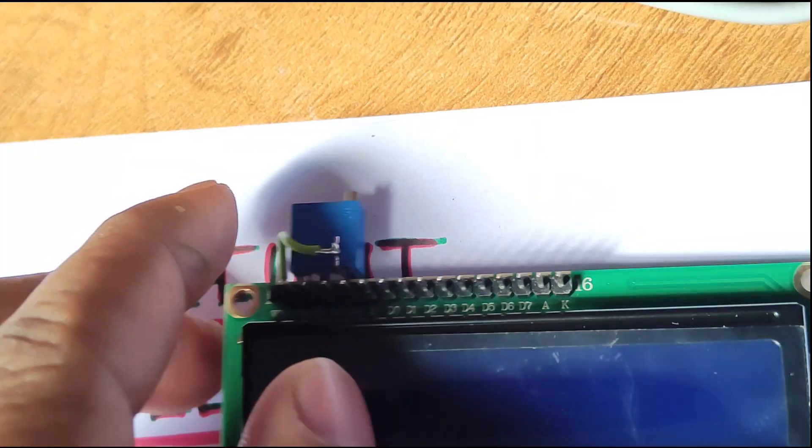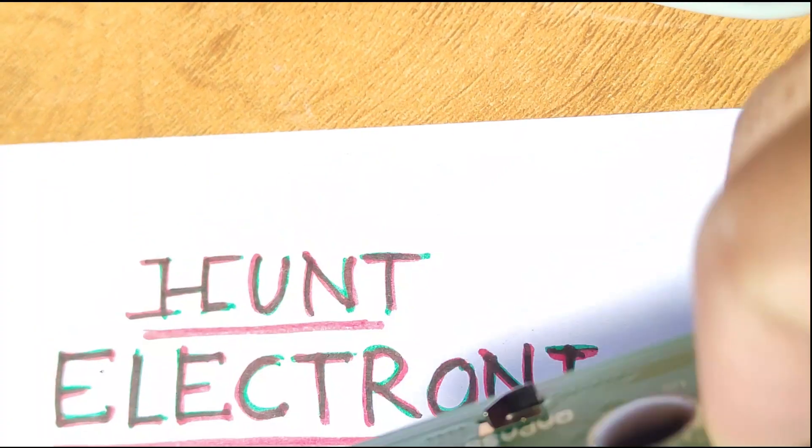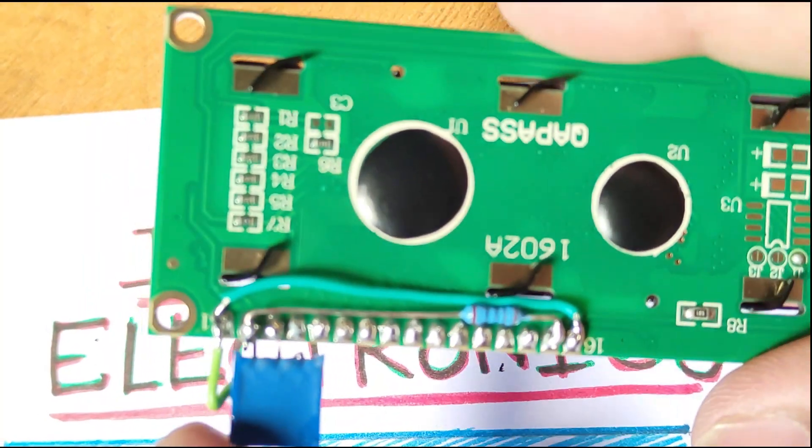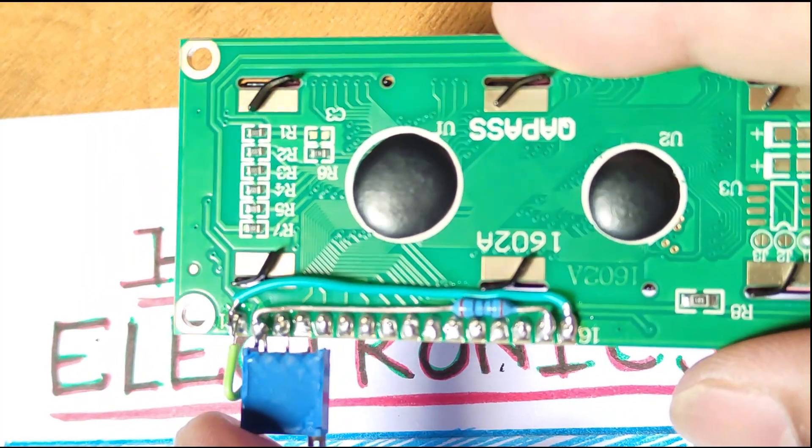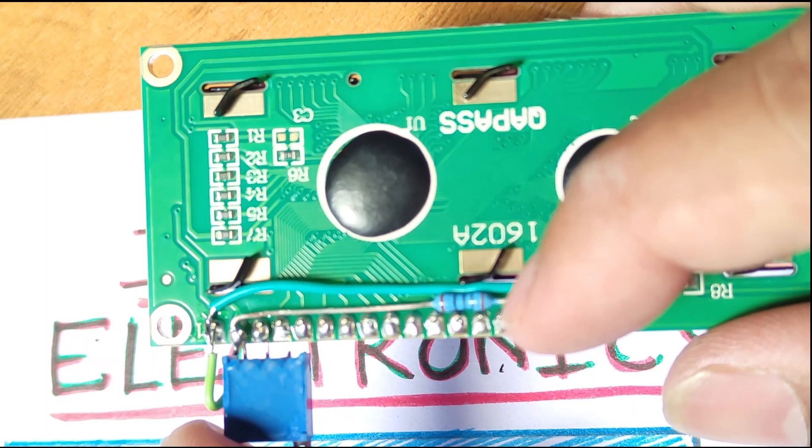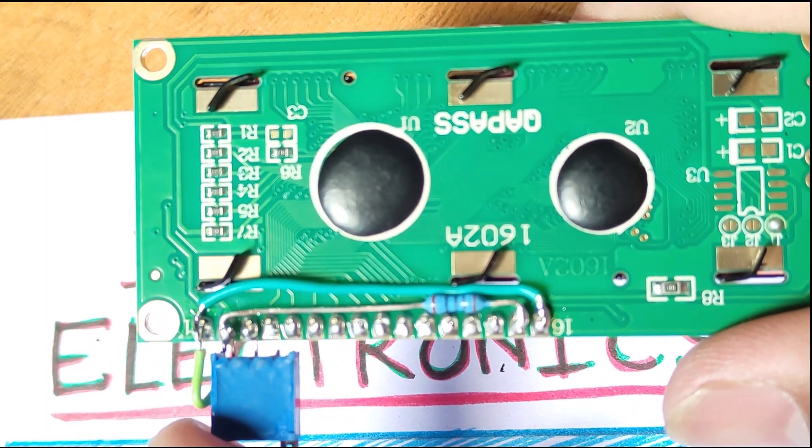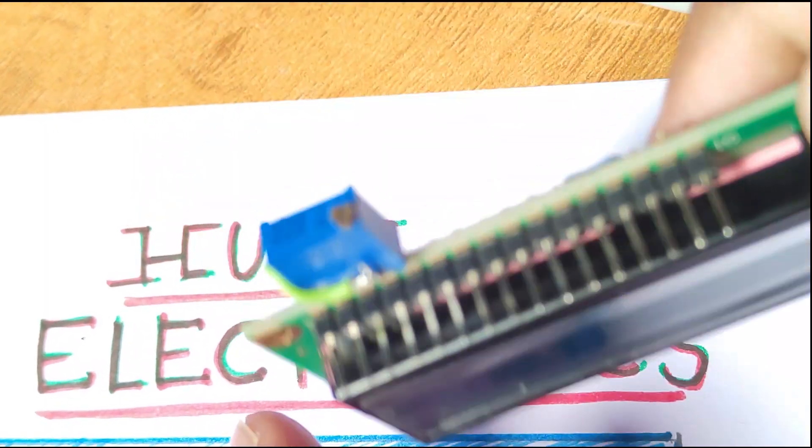Now let us connect the preset. You can see that we have completed the soldering. We have connected one resistor of 100 ohm to the backlight LED and we have connected the pot.